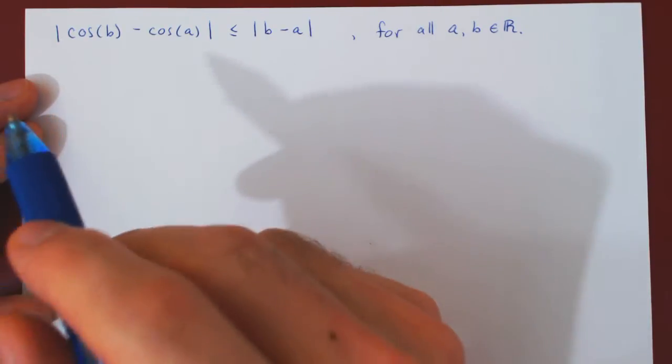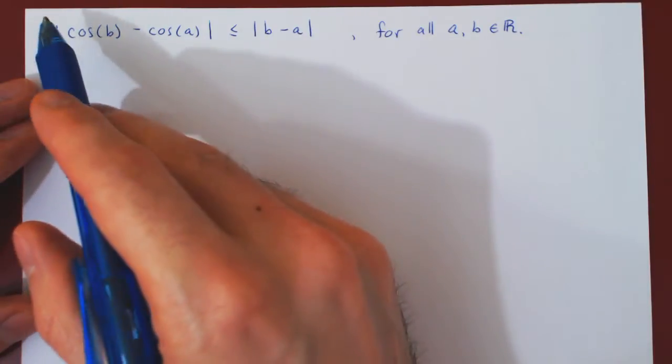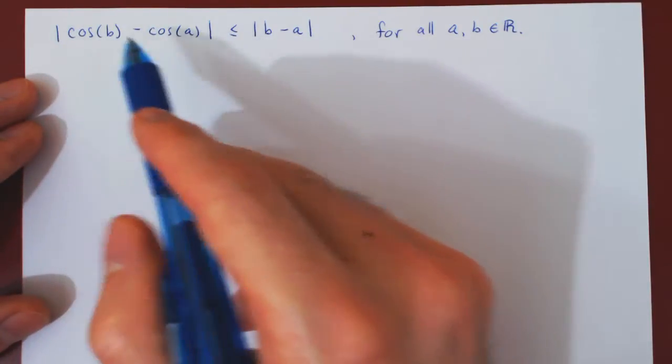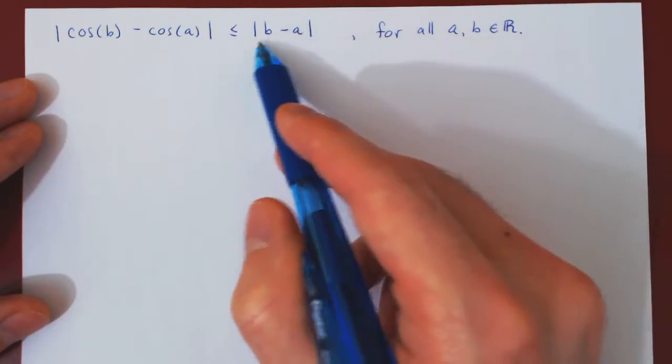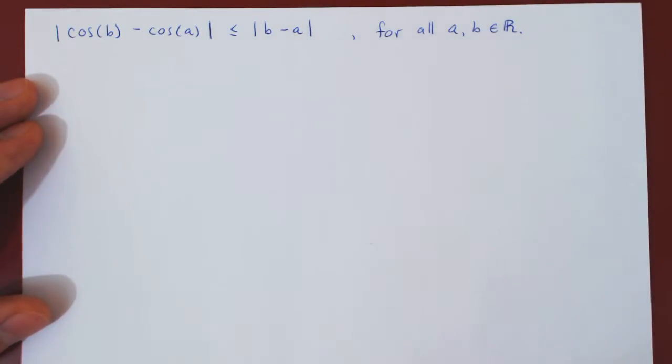Okay, so in this video, we will use the mean value theorem to prove that the absolute value of cos(b) minus cos(a) is less than or equal to the absolute value of b minus a for all real values of a and b.